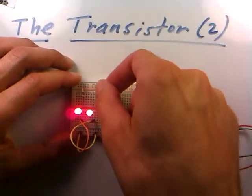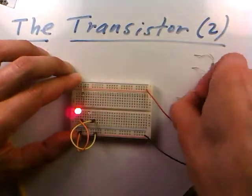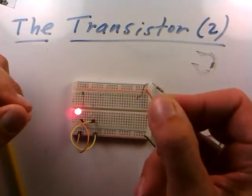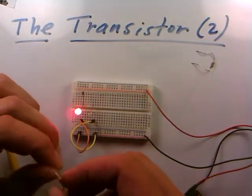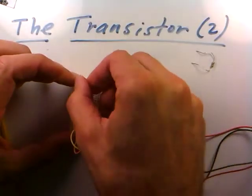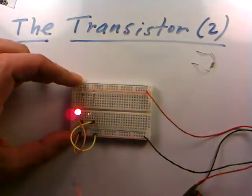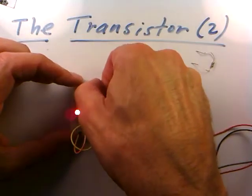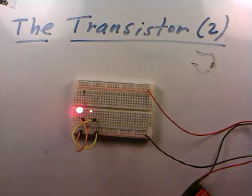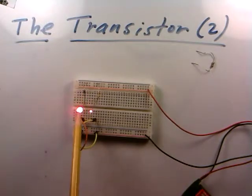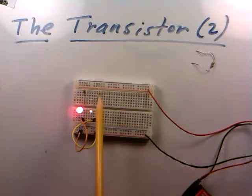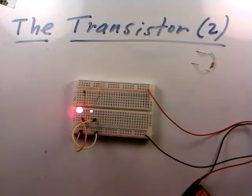If I take out this 100 ohm resistor and replace it with a 10,000 ohm resistor — my brown-black-orange resistor — and place that in line with this LED, you can see it comes on but with much less brightness. With the 100 ohm resistor, the current is resisted the least so the LED comes on nice and bright. With the 10,000 ohm resistor, the LED comes on very dimly because the 10,000 ohm resistor is resisting the current to a large extent.